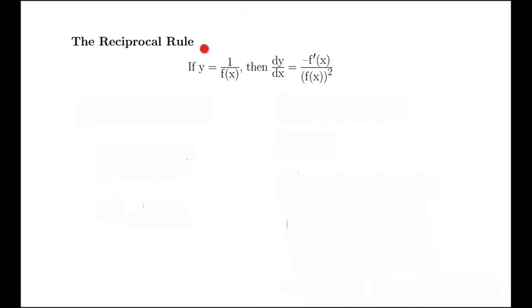The reciprocal rule. If we have y equals 1 over f of x, that's the reciprocal of f of x, then this is the rule we use to take the derivative of y. It's minus the derivative of what's in the denominator, divided by the denominator squared.